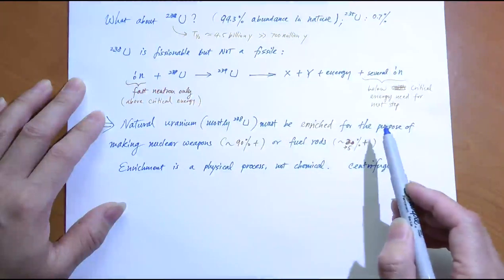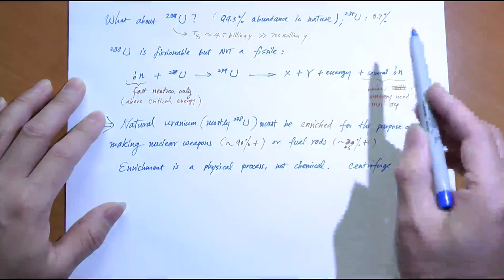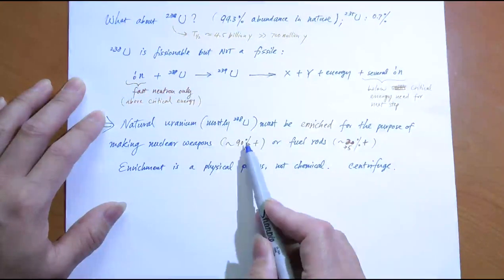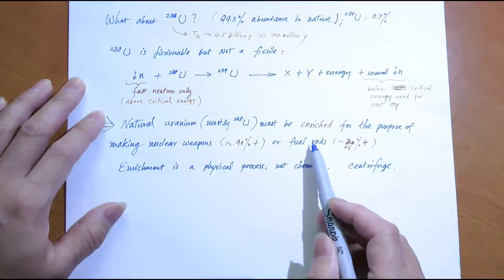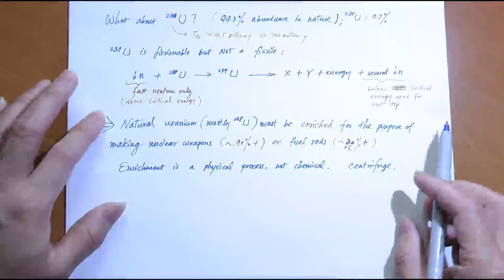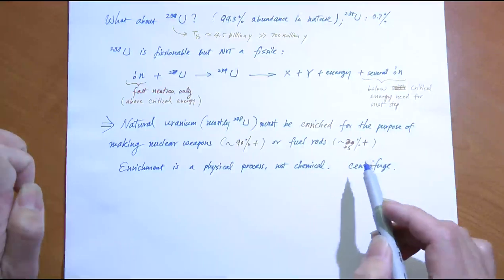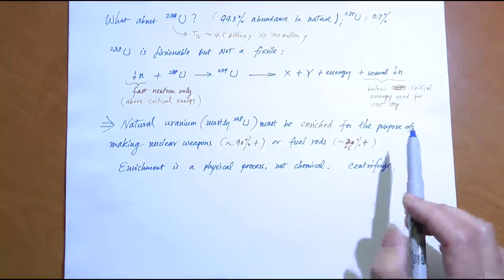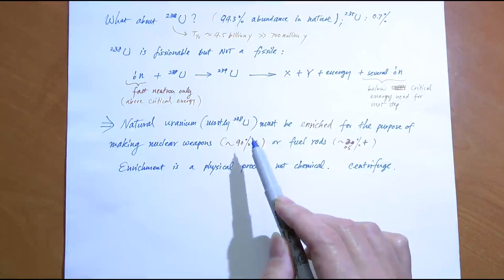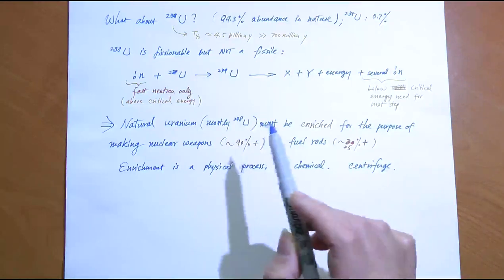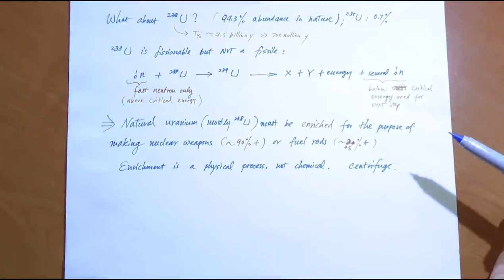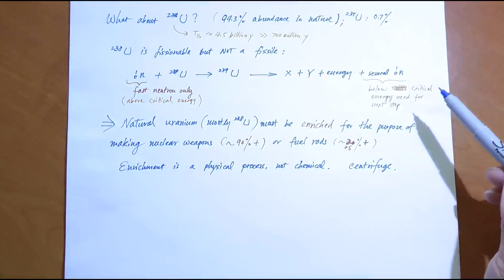The natural abundance of U-235 is only 0.7%, which is useless as a bomb. For a bomb, you need 90% U-235 or more. Even for fuel rods in a power plant, you need about 2–5% instead of 0.7%. This enrichment process is difficult and expensive because there is no chemical difference between U-238 and U-235 — they have exactly the same chemical properties. The only way to separate them is through physical means, taking advantage of their slightly different masses.